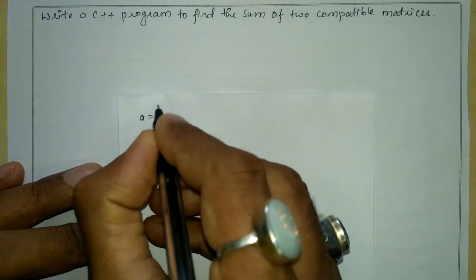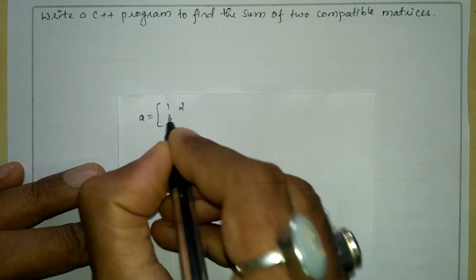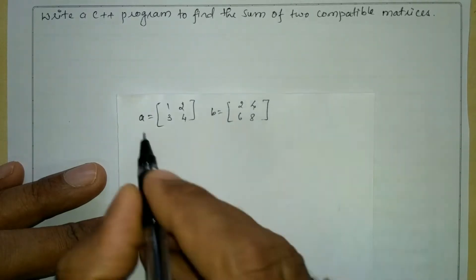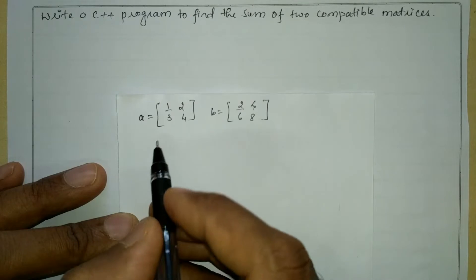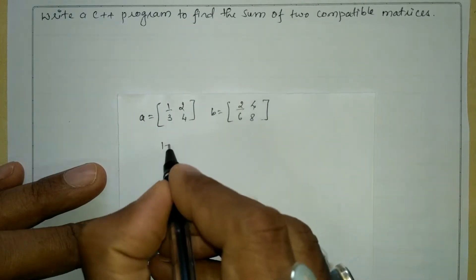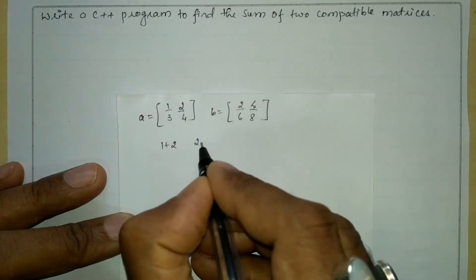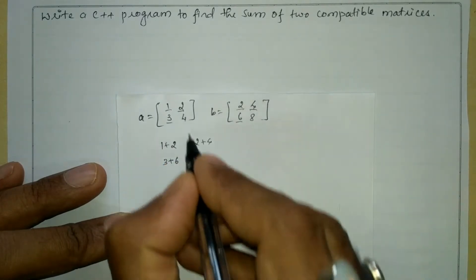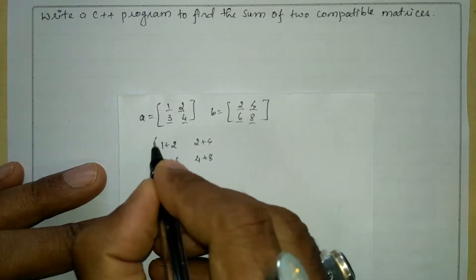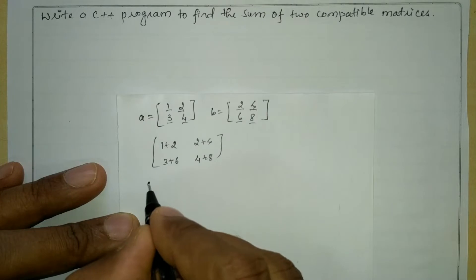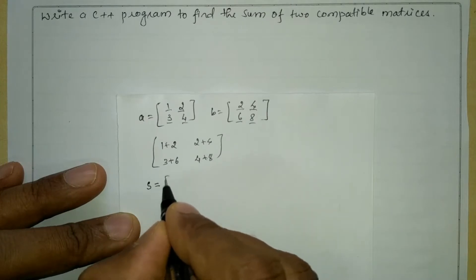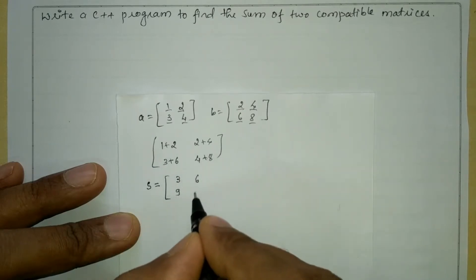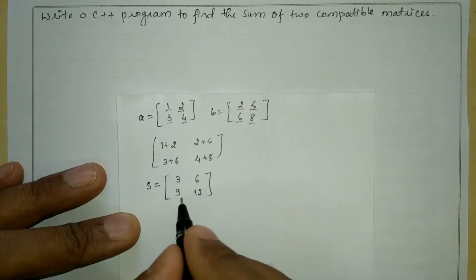For example, A is equal to 1, 2, 3, 4 and B is equal to 2, 4, 6, 8. The corresponding elements will be added: 1 plus 2, then 2 plus 4, next 3 plus 6, and 4 plus 8. So the resultant sum matrix S is equal to 3, 6, 9, 12.